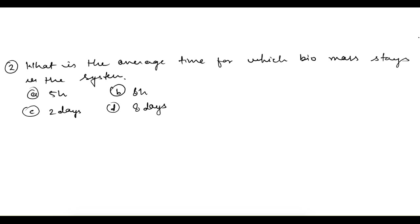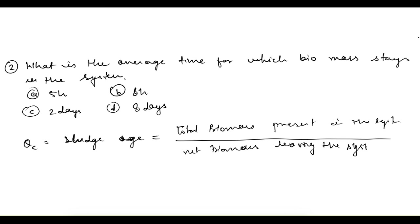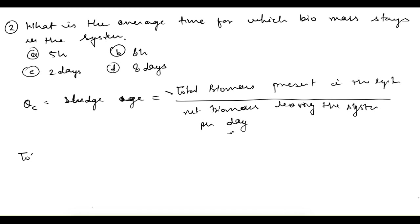The next part asks: what is the average time for which biomass stays in the system? This is the sludge age or mean cell residence time (θc). It is defined as the total biomass present in the system divided by the net biomass leaving the system per day. So we need to find total biomass first — that is the volume of the aeration tank multiplied by the MLSS concentration.